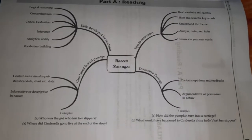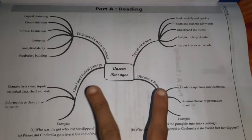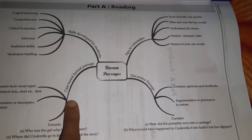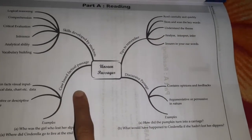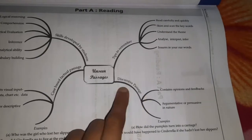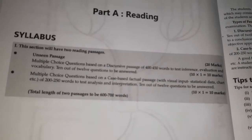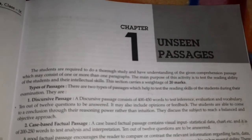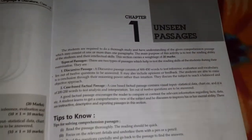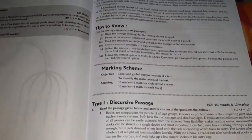In the examination there will be two types of passages. The first one is a case-based factual passage and the second one is discursive passages. This is the syllabus of Part A, which is reading. From here they have started the unseen passages, and they have also told us about the marking scheme.